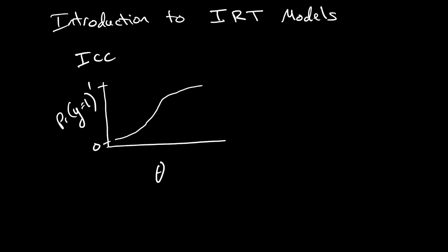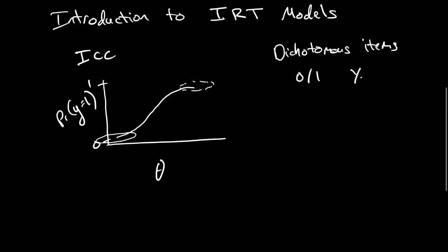It's this logistic monotonic curve that has a lower asymptote of zero and upper asymptote of one. This item characteristic curve encompasses the whole range of possible probabilities for the item response. You'll notice that this is for dichotomous items where the outcome is zero one, yes or no, or we can categorize the response to only have two response options.